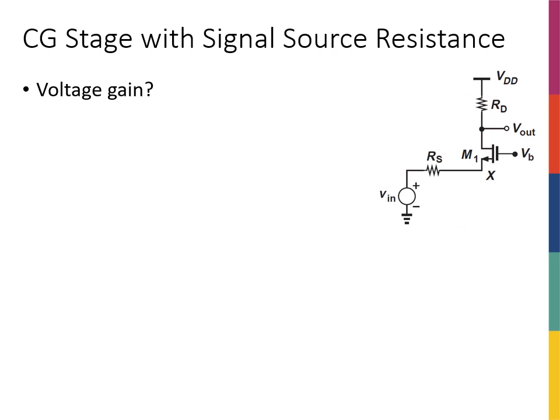Let's expand our circuit to include a resistor in the source. Up to now we didn't have this, but we might actually have resistance in the source, or even better we might consider the case where we have connected a real source instead of an ideal source. Remember when we were talking about a microphone or any other signal source connected to our circuit — it always had an internal resistance. So Rs can be considered as the internal resistance of our source.